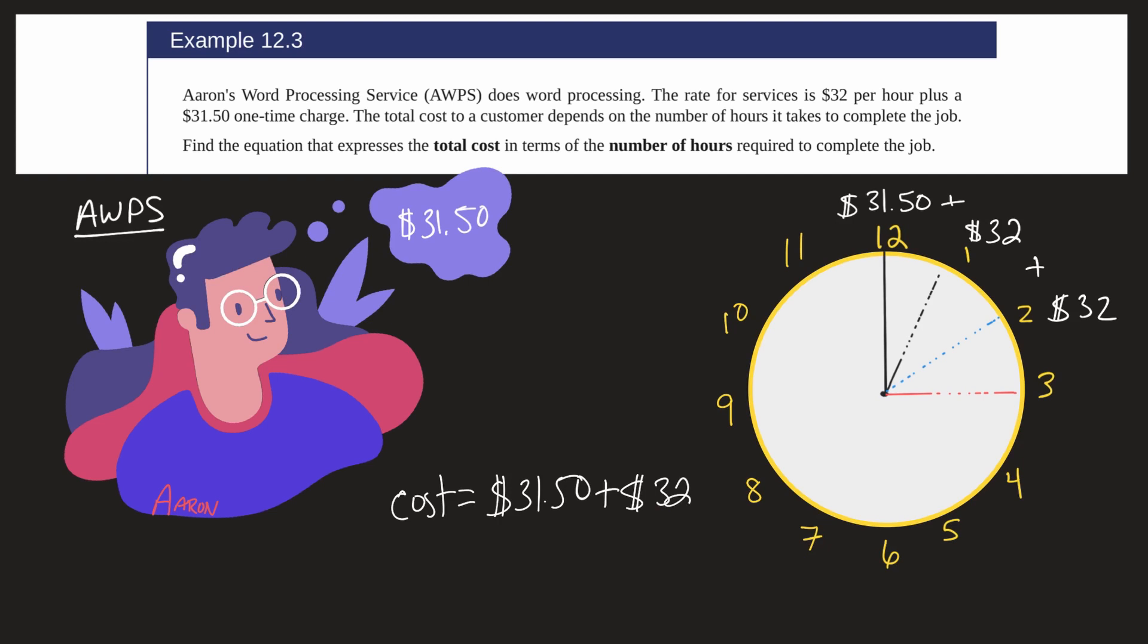And we'll say the hour is the X. That's the variable. So we can say Y equals 31.50 plus 32X.